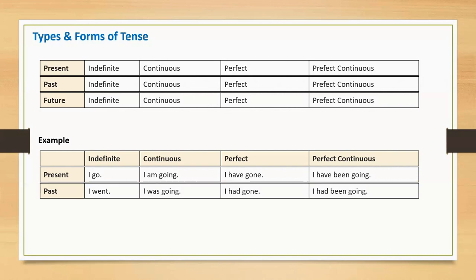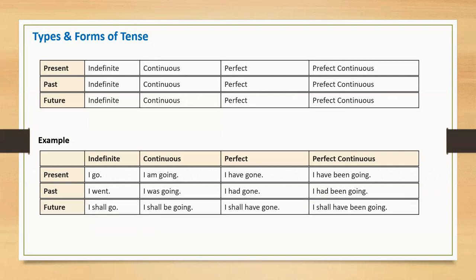Similarly, past indefinite: I went. Past continuous: I was going. Past perfect: I had gone. Past perfect continuous: I had been going.